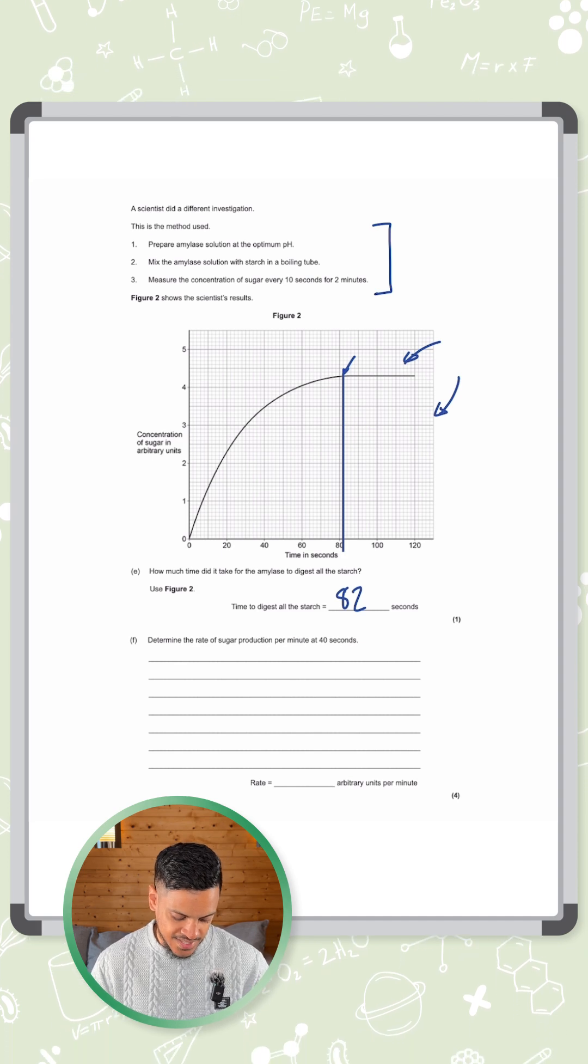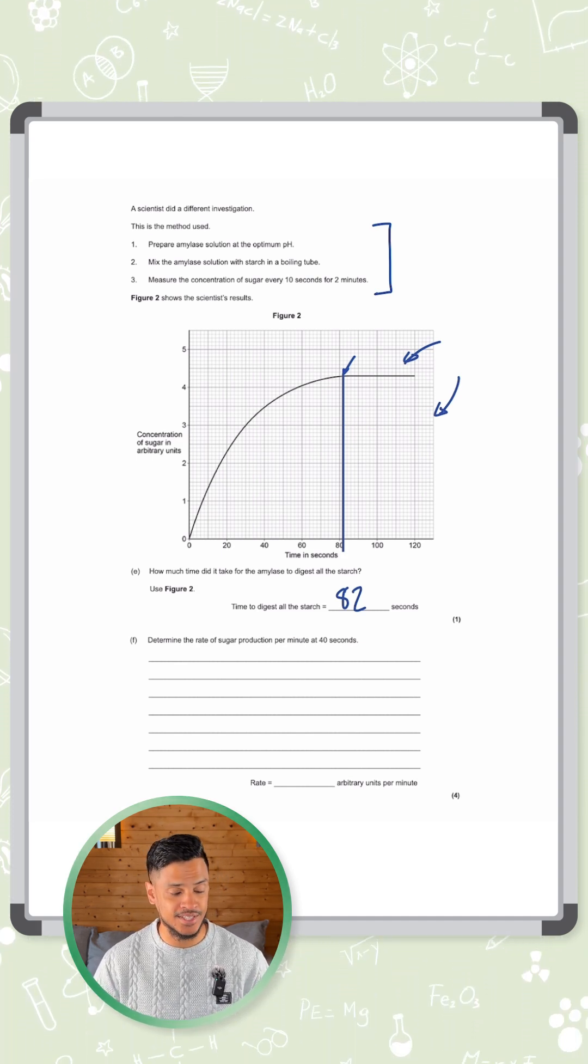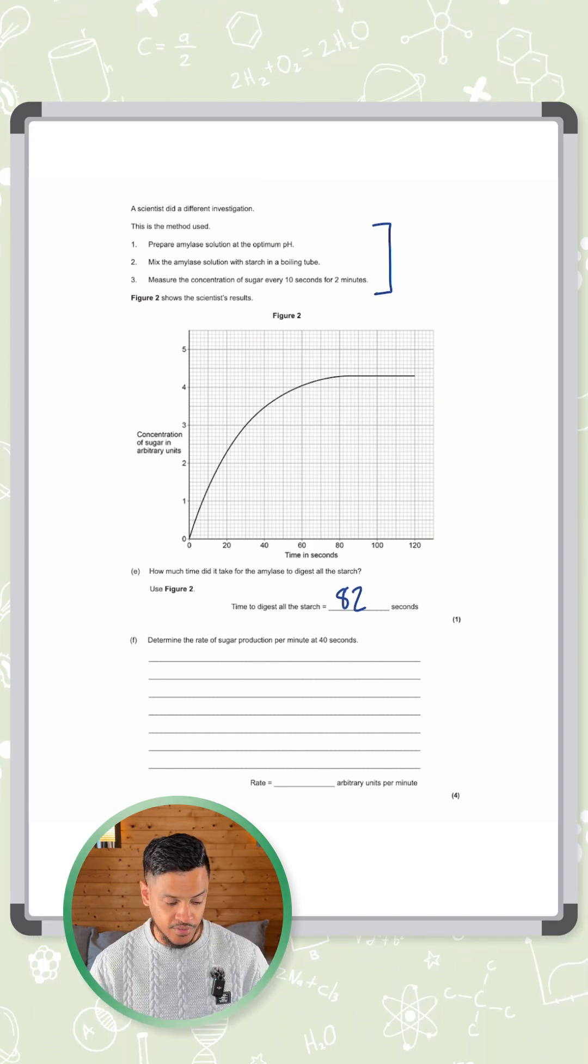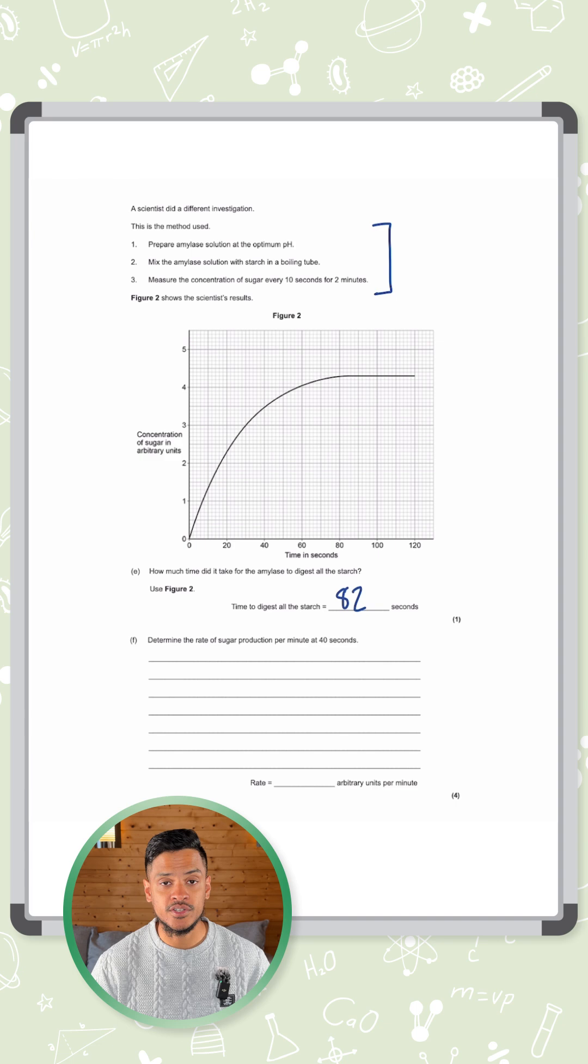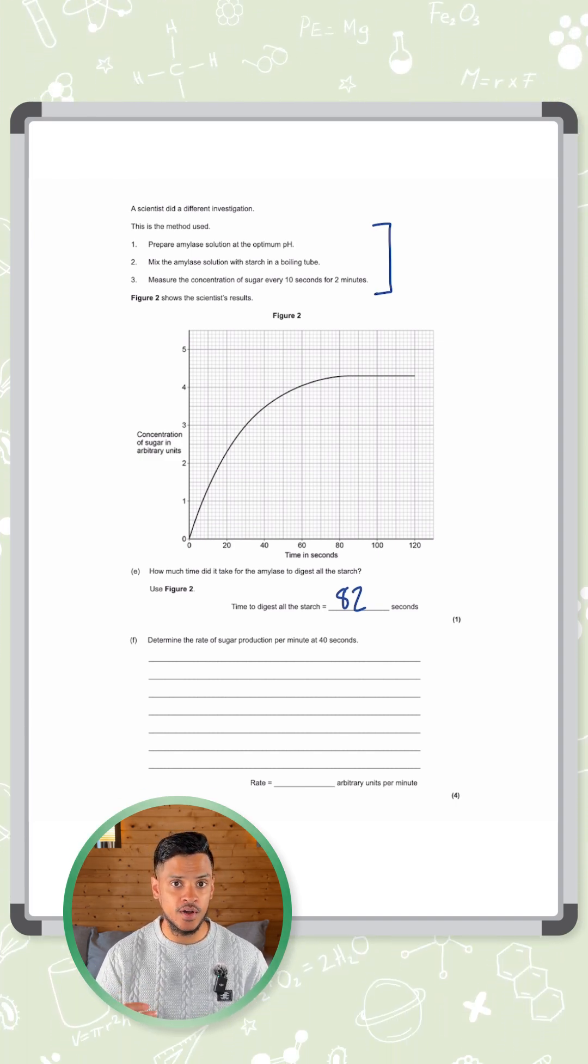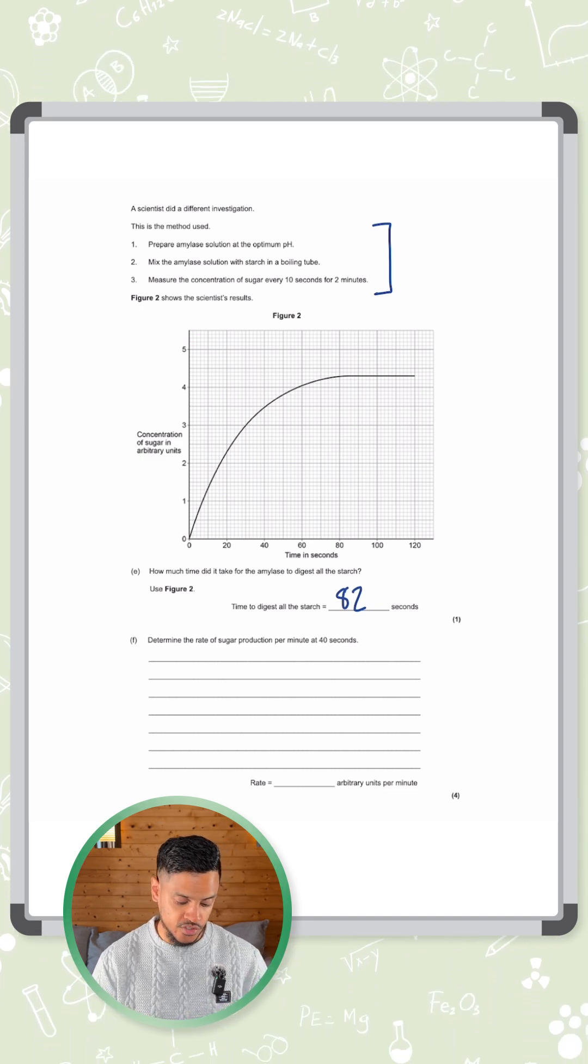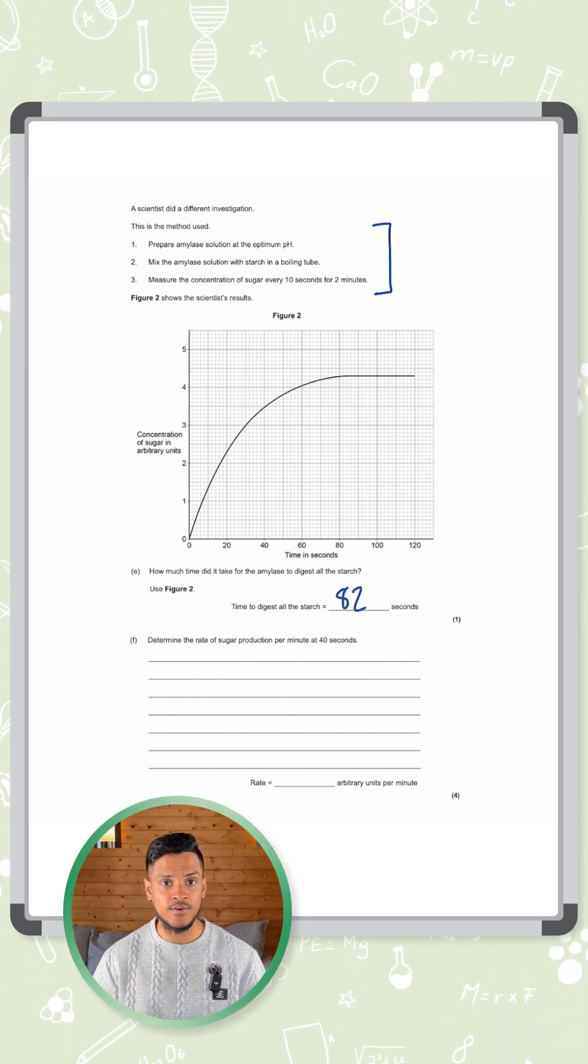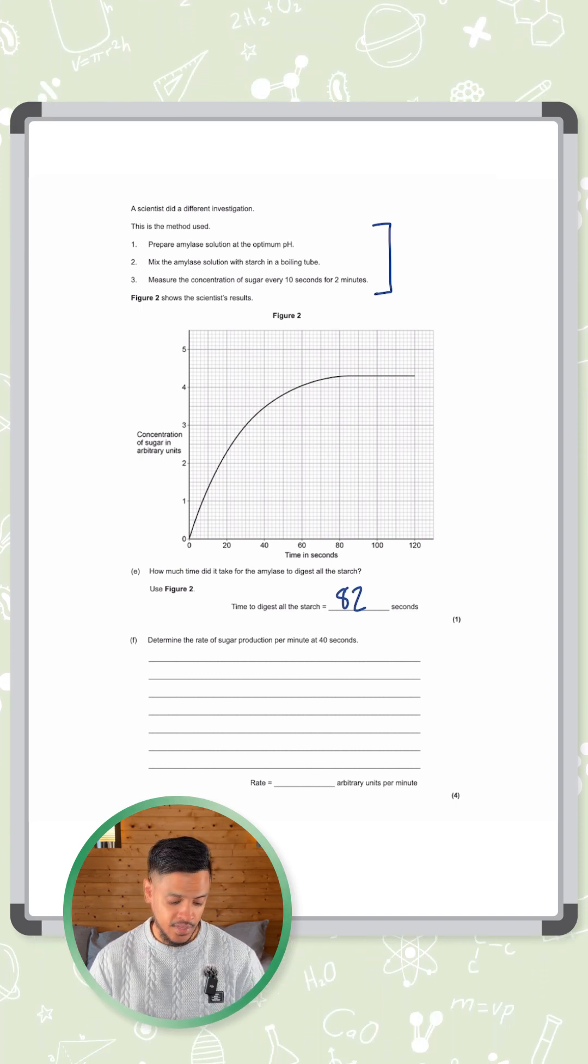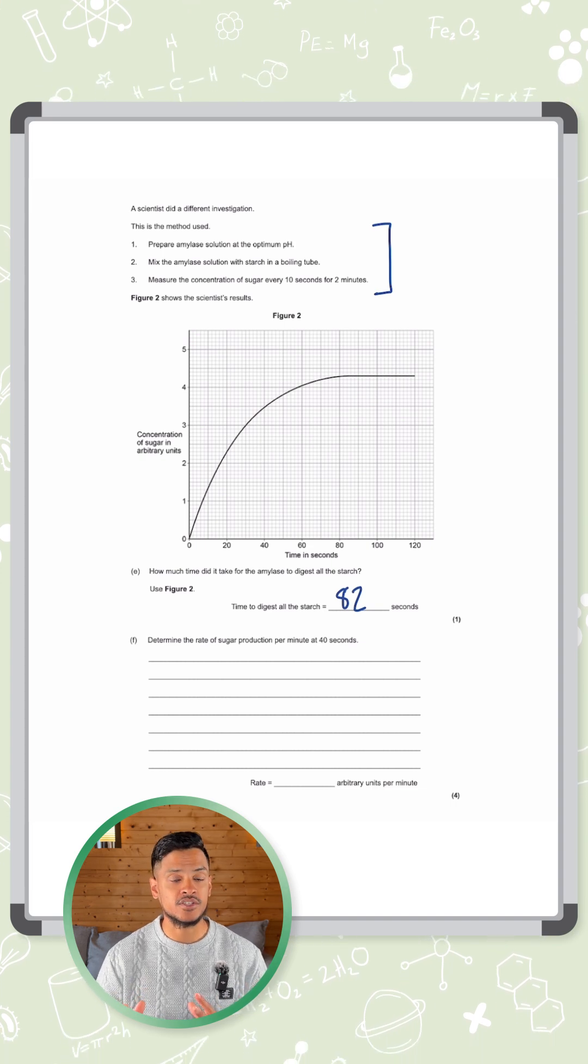Next part says determine the rate of sugar production per minute at 40 seconds. Okay, so this is a tricky one. Let me rub all of this out first because to find the rate, what you need to do is find the concentration over time. Rate is how fast is the reaction happening. So if you have a graph of concentration against time, to find how fast this reaction is happening, you need to find how steep the line is.